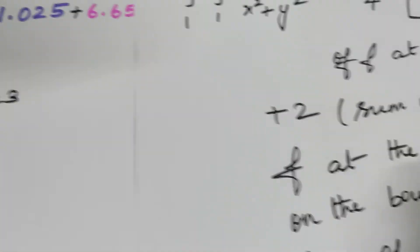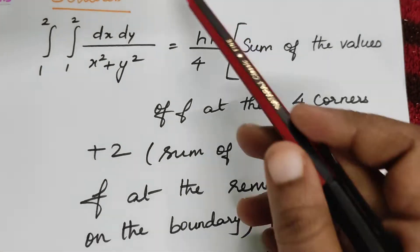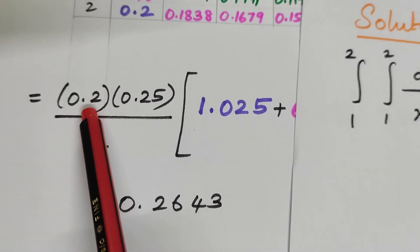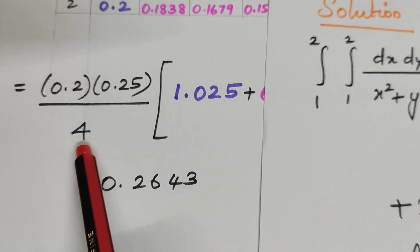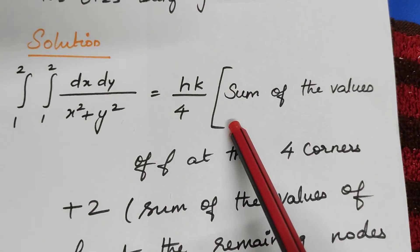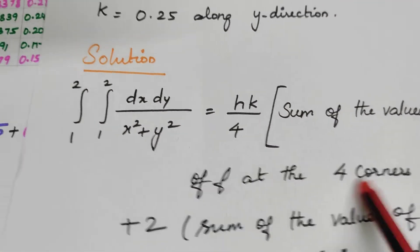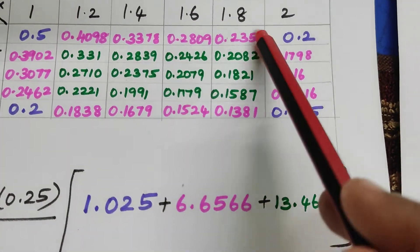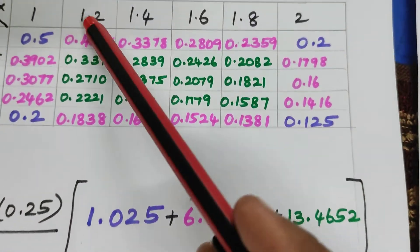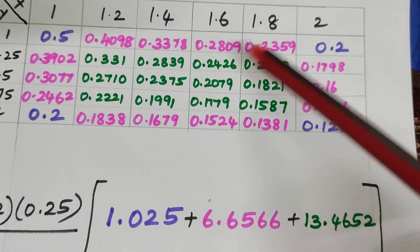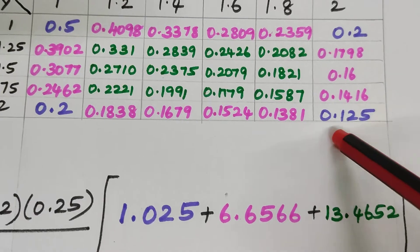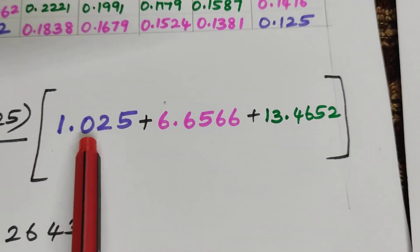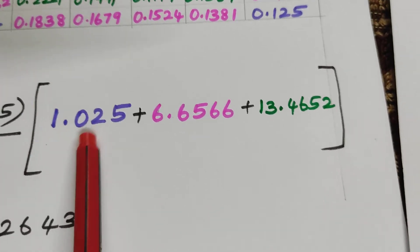The corner values are going to be 0.5, 0.2, 0.125 and 0.2. The formula is HK upon 4. H is 0.2, K is 0.25 upon 4. Sum of the values at the 4 corners are colored in purple color: 0.5 plus 0.2 plus 0.2 and 0.125. That gives you 1.025. I have written that answer in the same color.